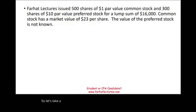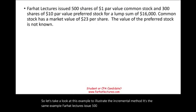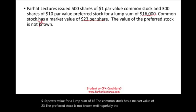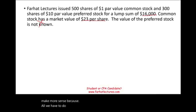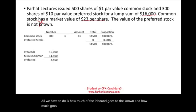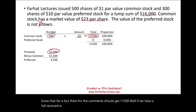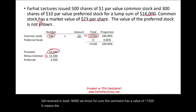Let's look at the incremental method using the same example. Farhat Lectures issued 500 shares of $1 par value and 300 shares of $10 par value for a lump sum of $16,000. This time, we know the common stock has a market value of $23, but the preferred stock's fair value is not known. With the incremental method, we assign the known amount to common stock: 500 shares times $23 equals $11,500. Since we received $16,000 in total and the common is worth $11,500, the remainder goes to the preferred.